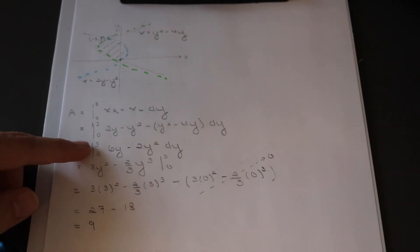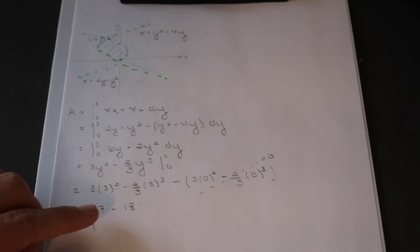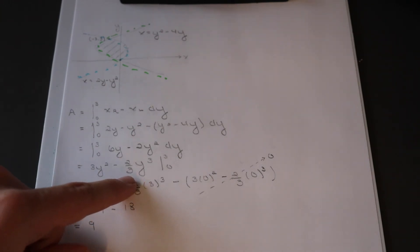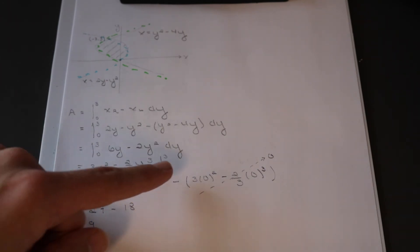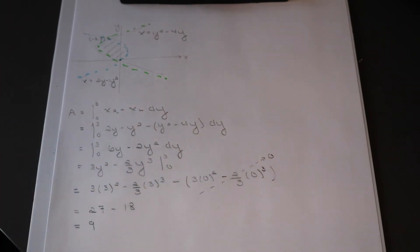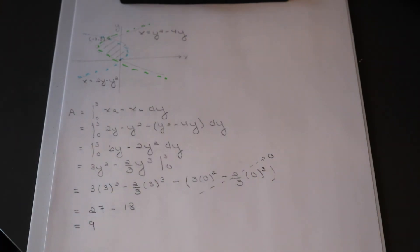The integration is straightforward: use the basic rule of adding 1 to the exponent and dropping the new exponent to the denominator. Once you have the integrated expression, plug in 3 for the upper bound and subtract the result when you plug in 0. Multiplying by 0 cancels those terms out, giving you an easy simplification.